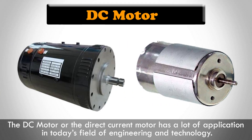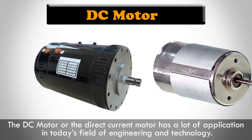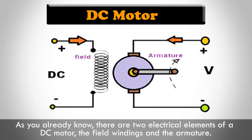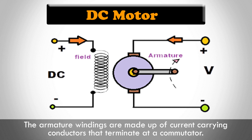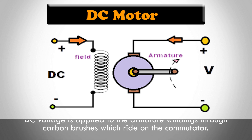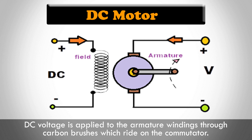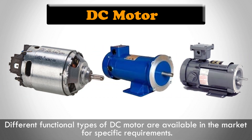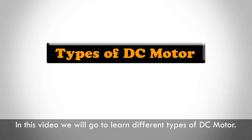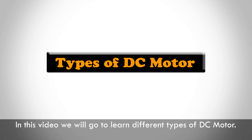The DC motor, or direct current motor, has a lot of applications in today's field of engineering and technology. There are two electrical elements of a DC motor: the field windings and the armature. The armature windings are made up of current-carrying conductors that terminate at a commutator. DC voltage is applied to the armature windings through carbon brushes which ride on the commutator. Different functional types of DC motor are available in the market for specific requirements. In this video, we will learn about the different types of DC motors.